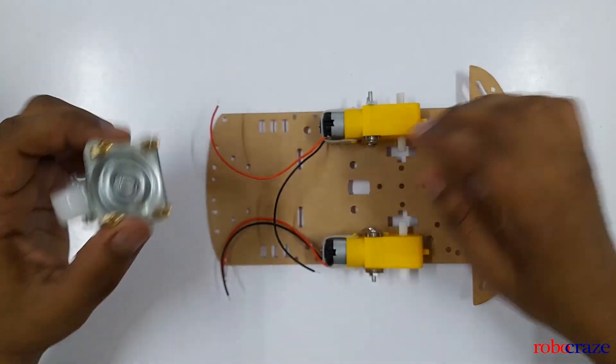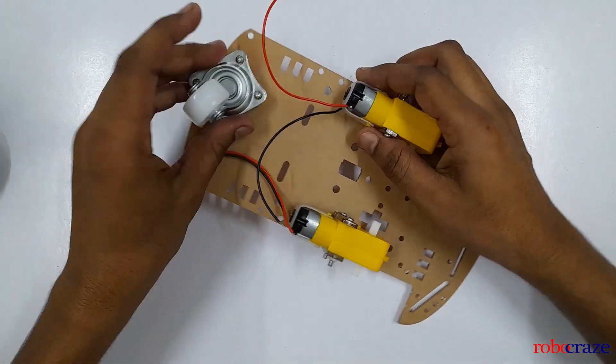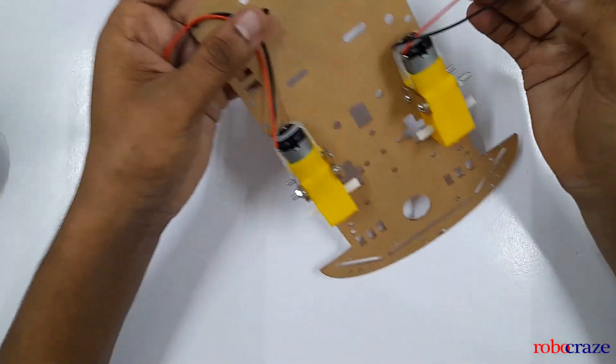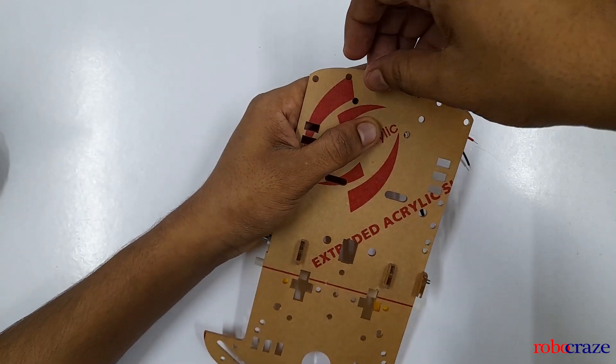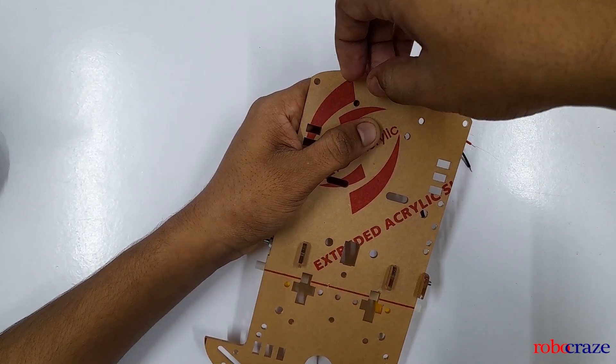Next we need to mount it on the chassis. For that, place it on the chassis such that these four holes match the spacers positioning. Use the other set of screws and tighten it up using a screwdriver.